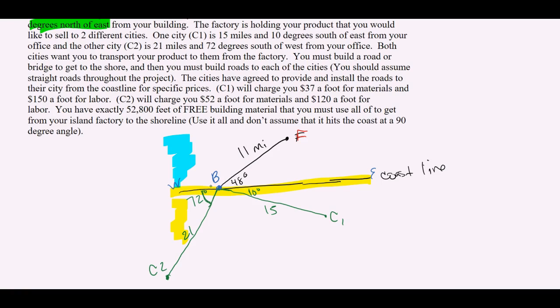And yes, we're going to assume straight roads. The cities have agreed to provide and install the roads to their city from the coastline for specific prices. And then it's going to give us all the money. I'm not going to worry about the money yet because that's going to be my very last step. I just need to figure out what the crap's happening in my picture. You have exactly this many feet of free building material that you must use all of to get from your island factory to the shoreline.